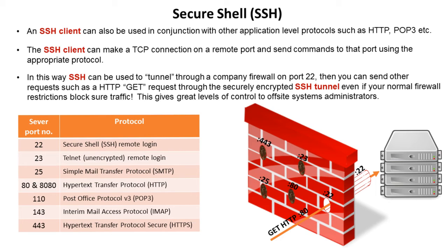In this way, you can use SSH to effectively tunnel through a company firewall on port 22 — which is the port for Secure Shell. You can then send other requests through this tunnel, for example an HTTP GET request to grab a web page from the server. Not only does that mean we're bypassing the usual firewall rules, but the communication is also encrypted.